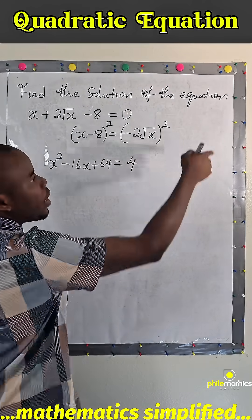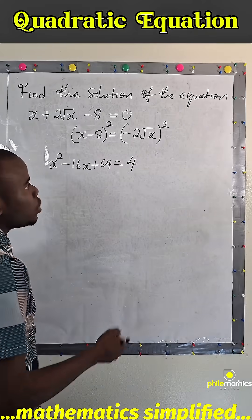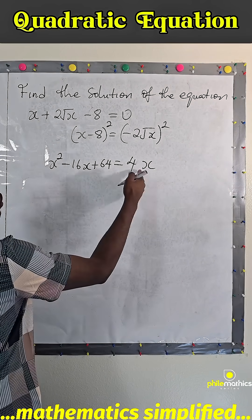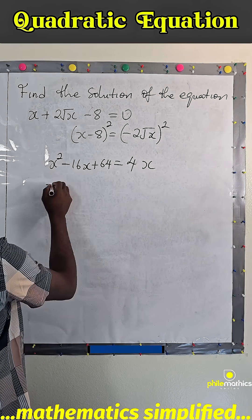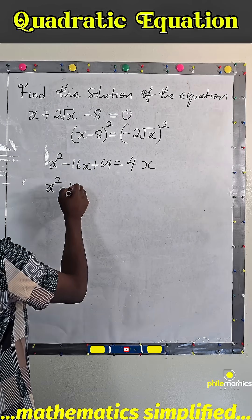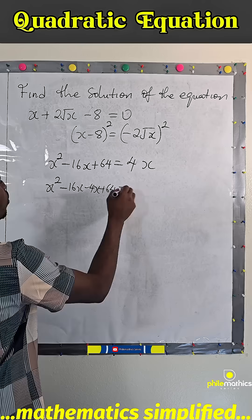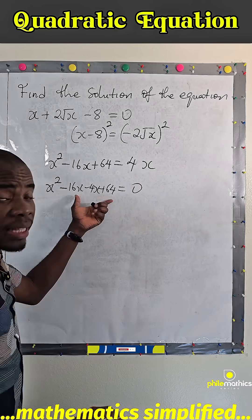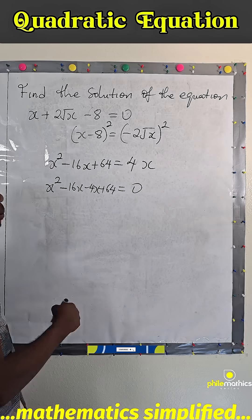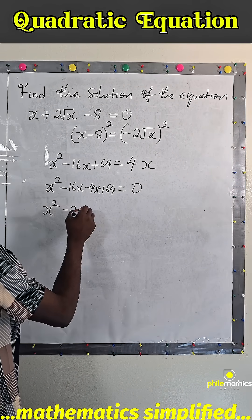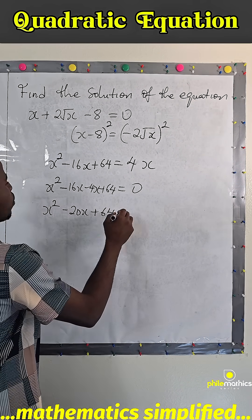And root x squared is root x times root x which is x. So if we take this to the left hand side we'll have x squared minus 16x minus 4x plus 64 equals 0. Minus 16x minus 4x is minus 20x, we'll have x squared minus 20x plus 64 equals 0.